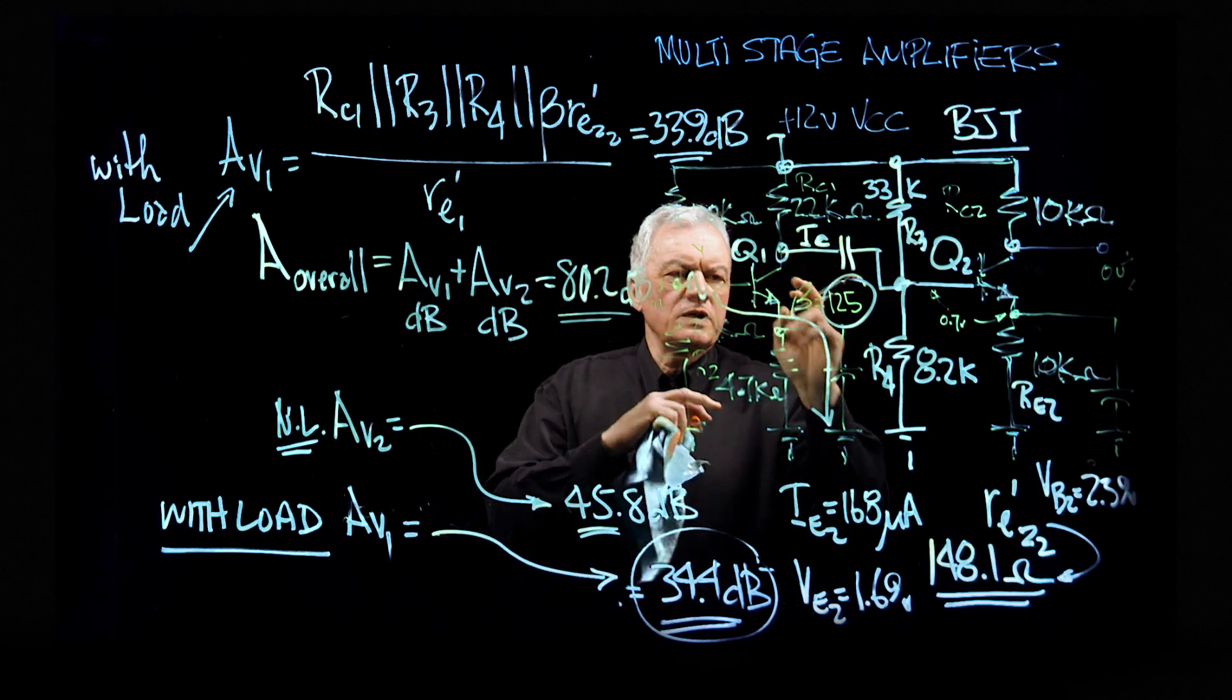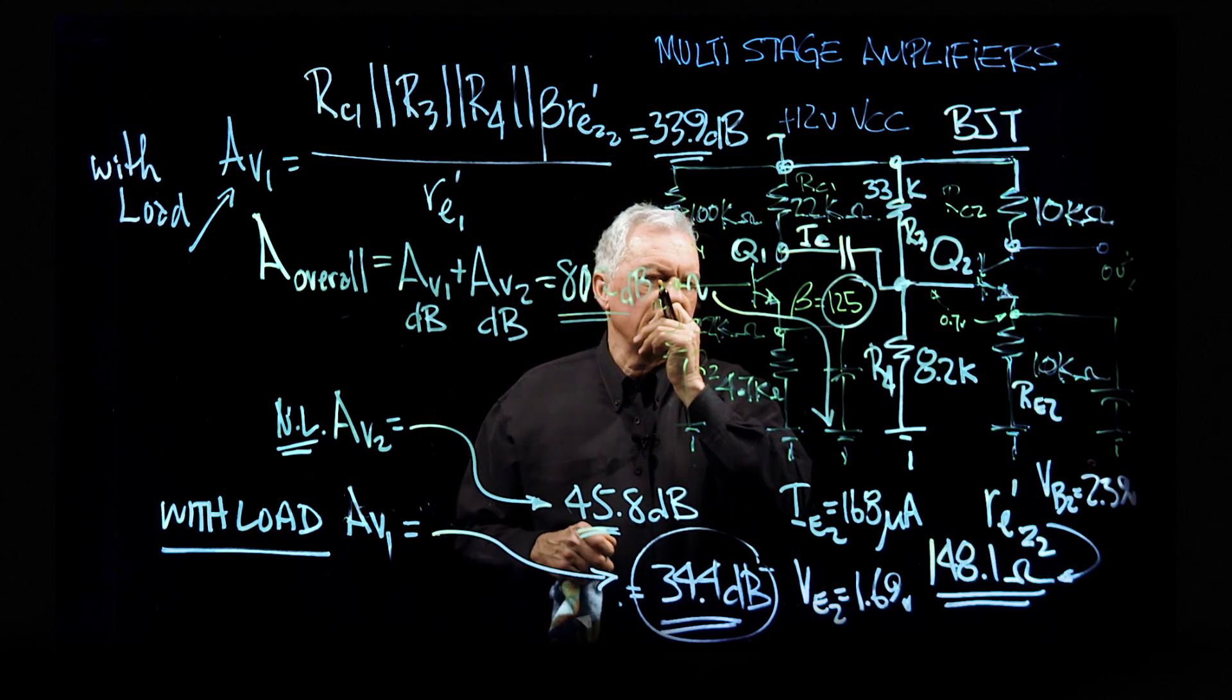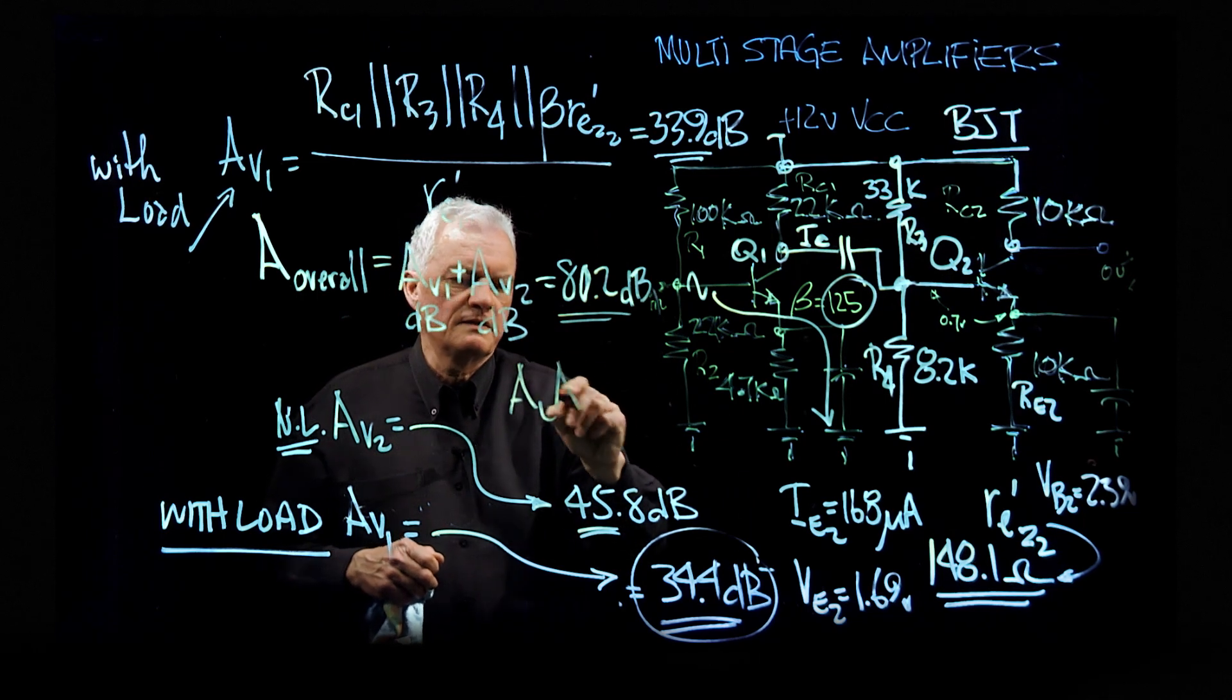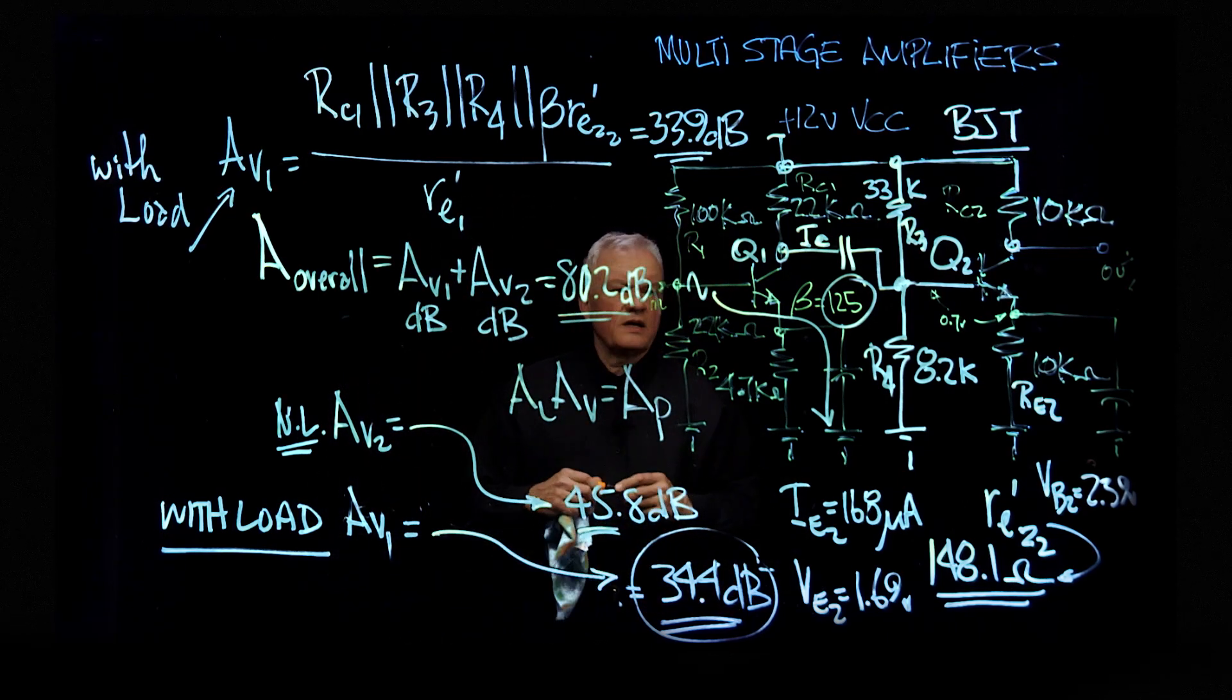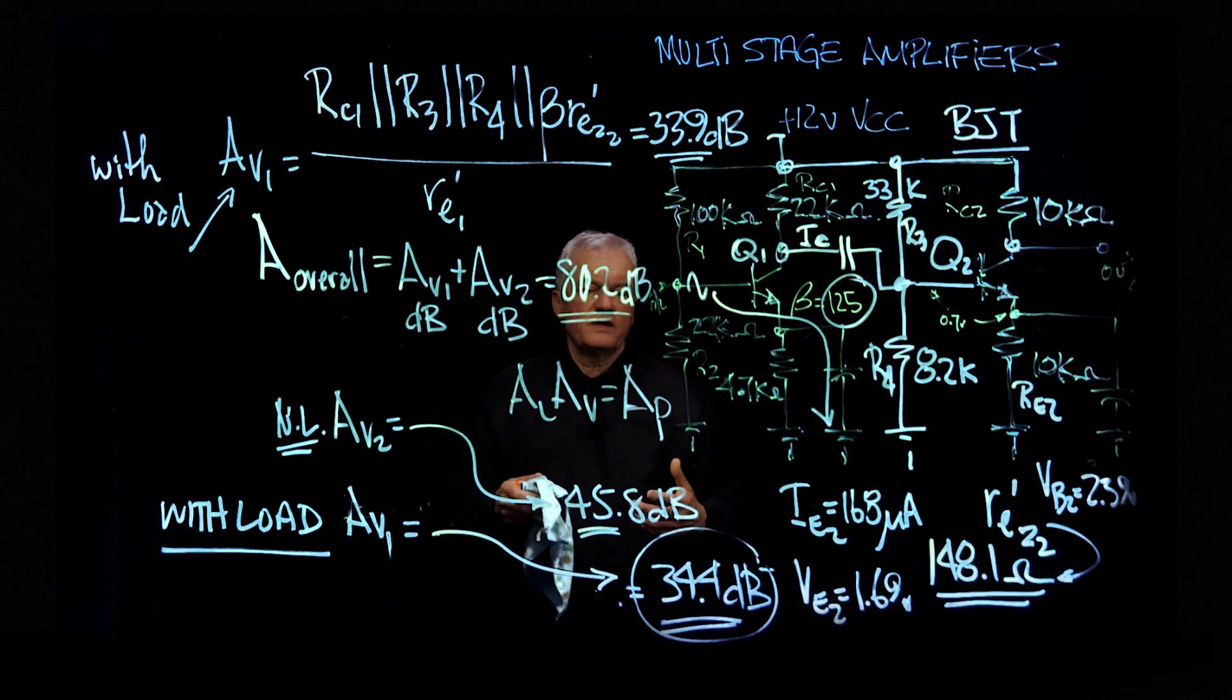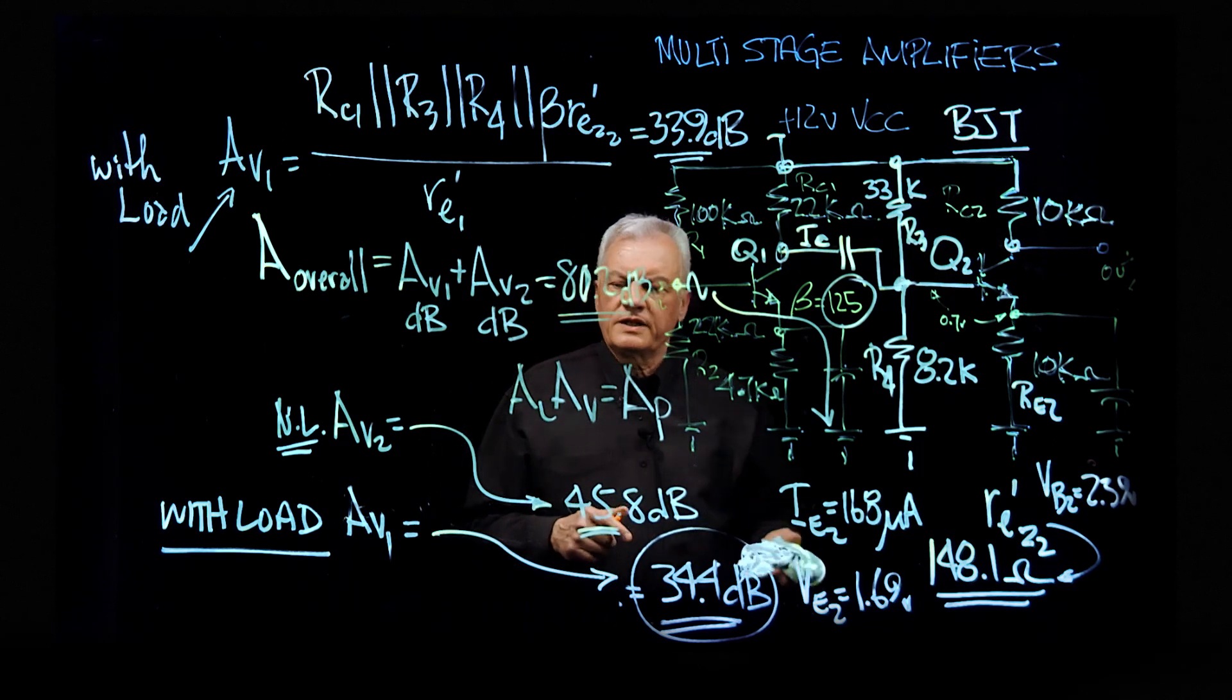So if you multiply 125 times the gain or take it to the log base 10, 20 log of that, and add that to the, sorry, if you multiply the current gain times the voltage gain, you'll get the power gain. And if you do that at logs, you will add them together. Okay, I'm going to leave that alone. I think that's a very good comprehensive understanding of bipolar junction transistor multistage amplifiers. And let's move on to the final topic of the course, which is the enhancement metal oxide semiconductor field effect transistor.